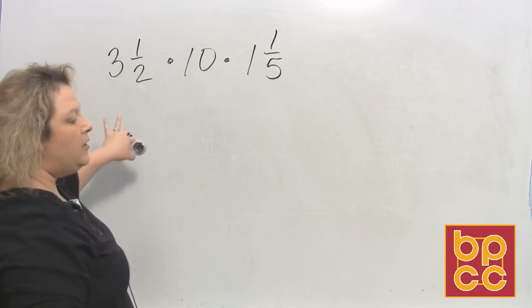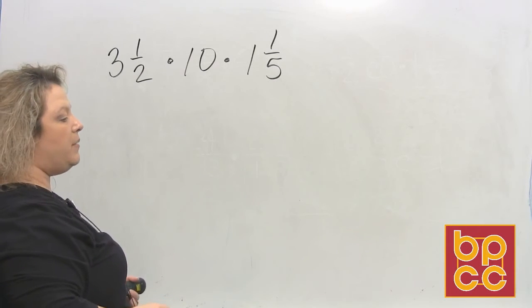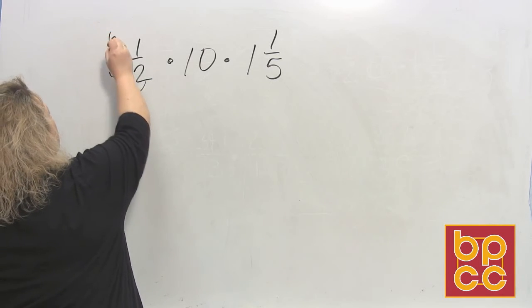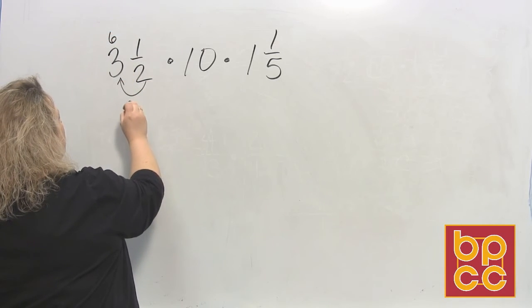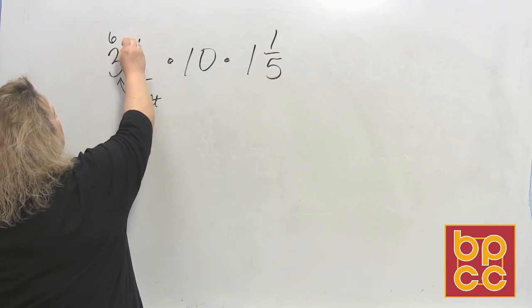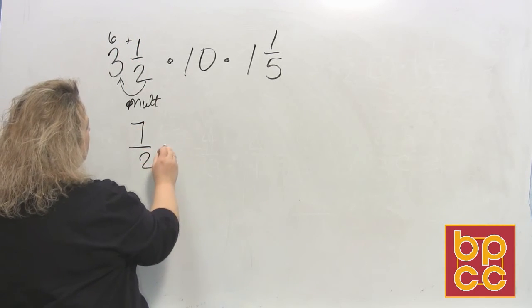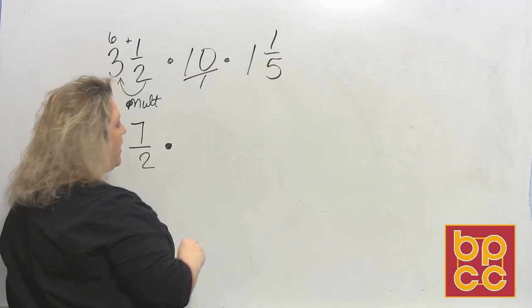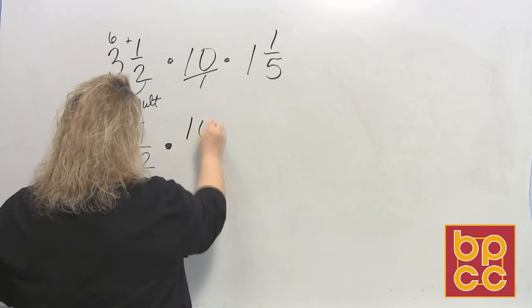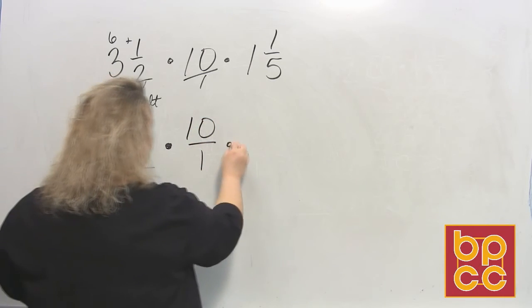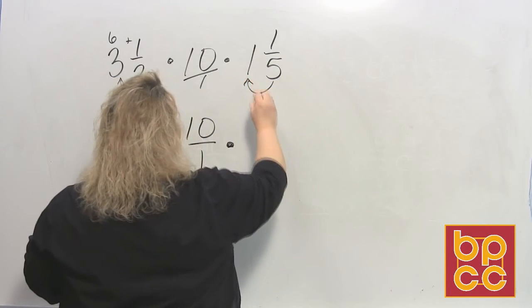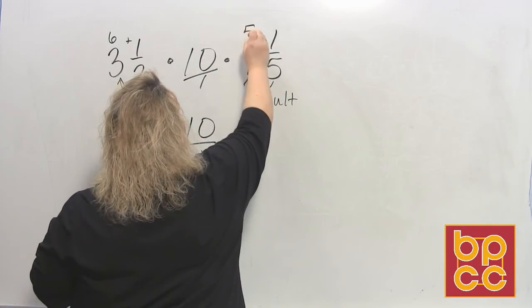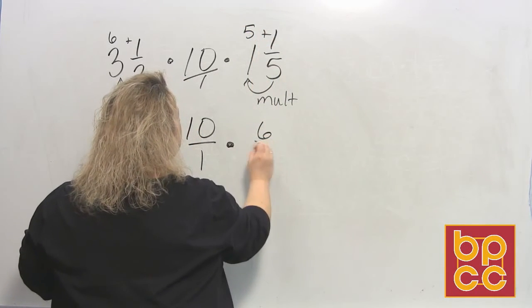So we have 3 and 1/2 times 10 times 1 and 1/5. Okay, again, you want to make sure that you take your mixed numbers and turn them into improper fractions. So that would be 2 times 3 is 6, plus 1 makes 7. So that would be 7/2 times all whole numbers. Remember, we just talked about that. All whole numbers will have a 1 under them in the denominator. So that would be 10/1 times 5 multiplied to 1 makes 5, plus 1 makes 6. So that's 6/5.